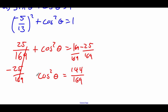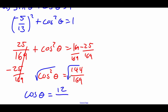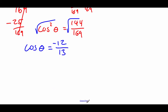Then we have to square root both sides. The square root of 144 is 12, and the square root of 169 is 13. This was a third quadrant angle, so the cosine is negative: negative 12 over 13. Using this cosine to help us find the secant, we just have to flip this fraction over, so it's negative 13 over 12.